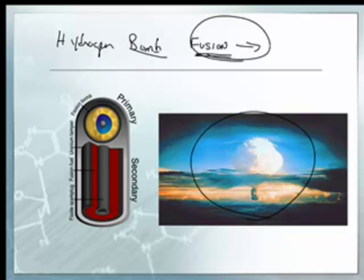To get fusion to work, you actually have to use an atomic bomb to get it really hot — hot enough to make it work. Otherwise it doesn't work. We're talking sun temperatures here.